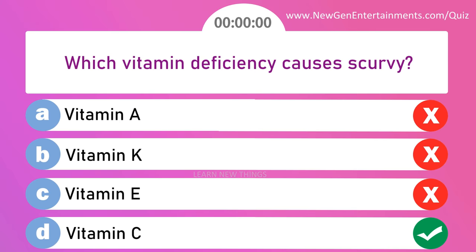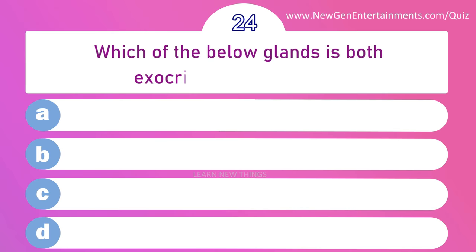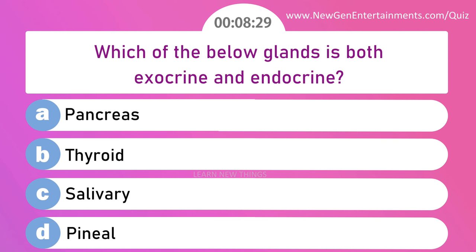Which of the below glands is both exocrine and endocrine? Options are: A) Pancreas, B) Thyroid, C) Salivary, and D) Pineal. Answer is option A: Pancreas.